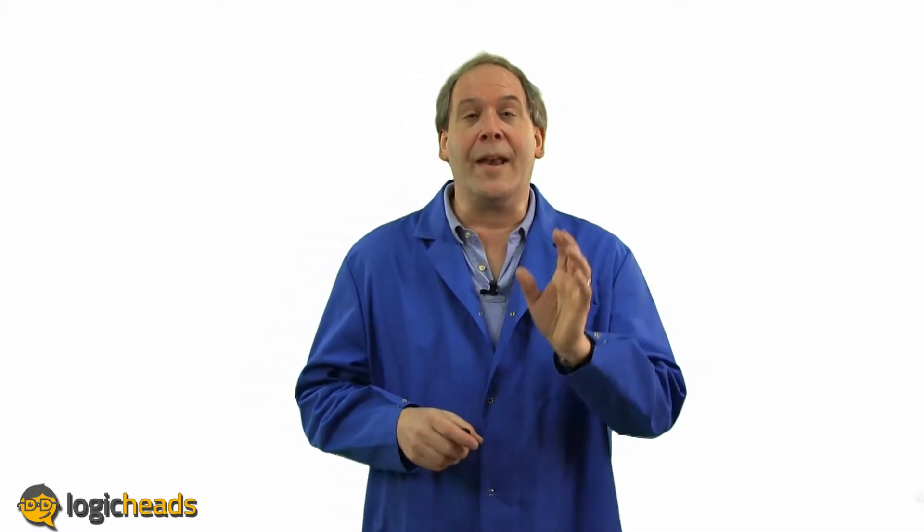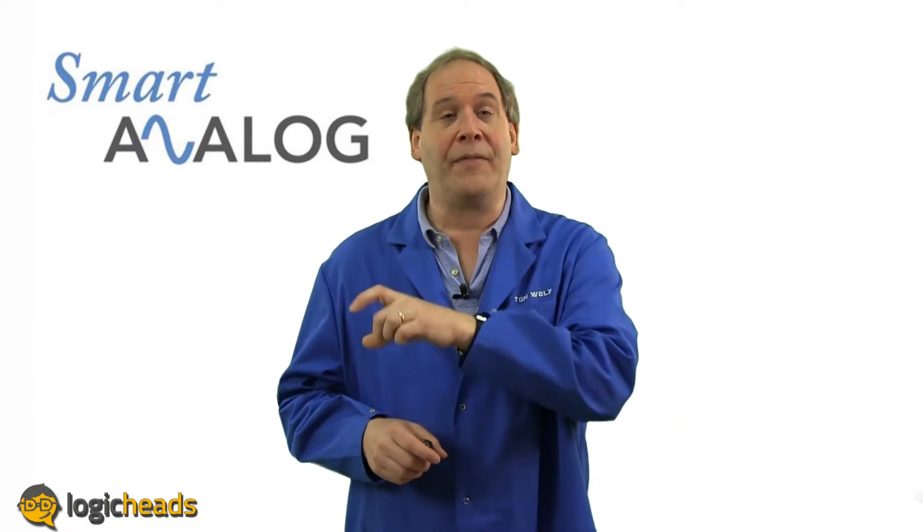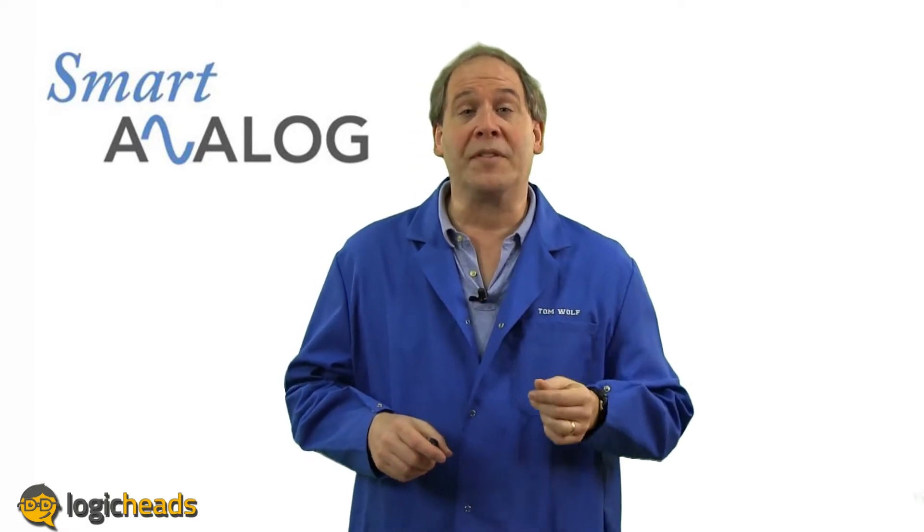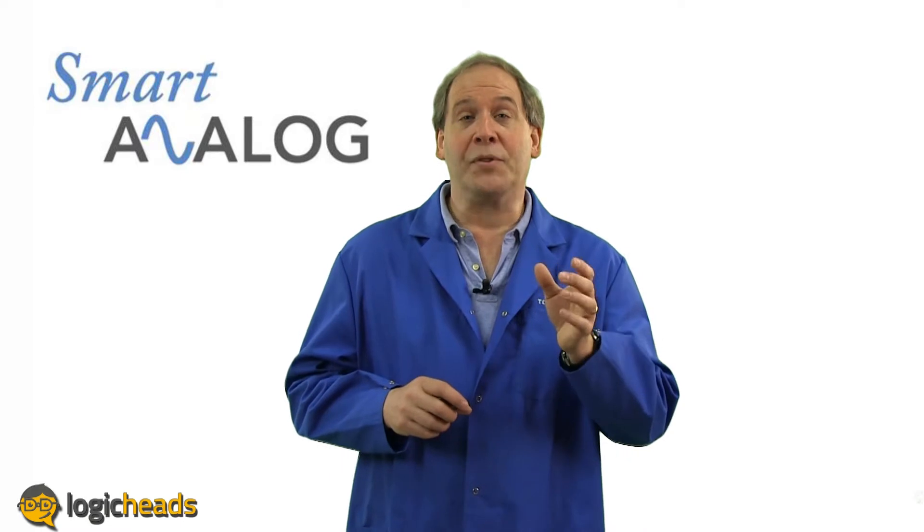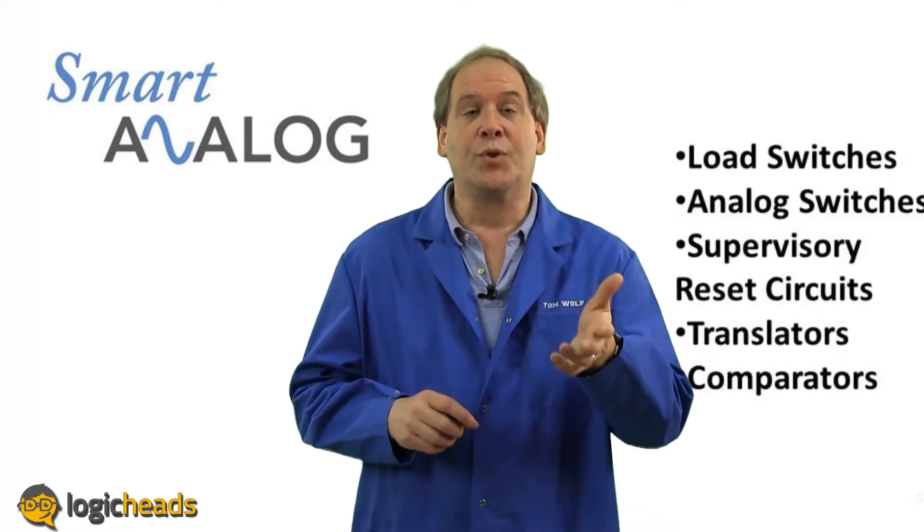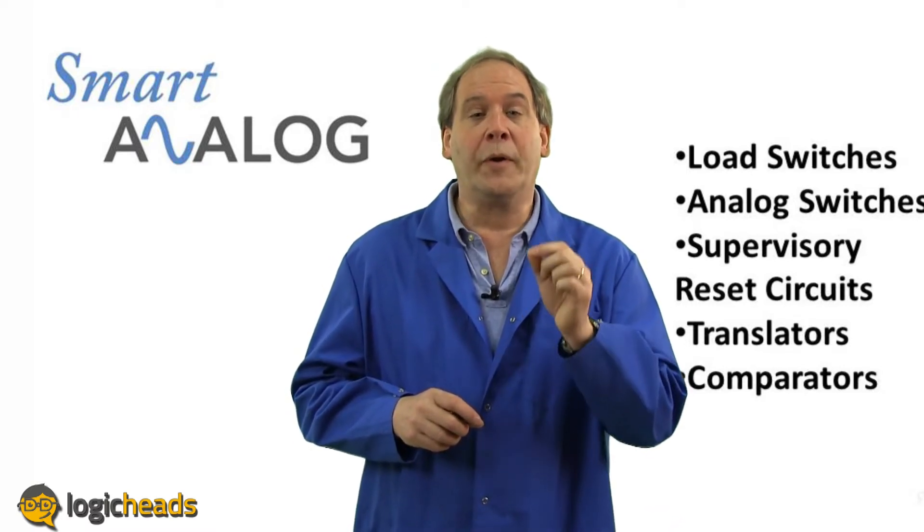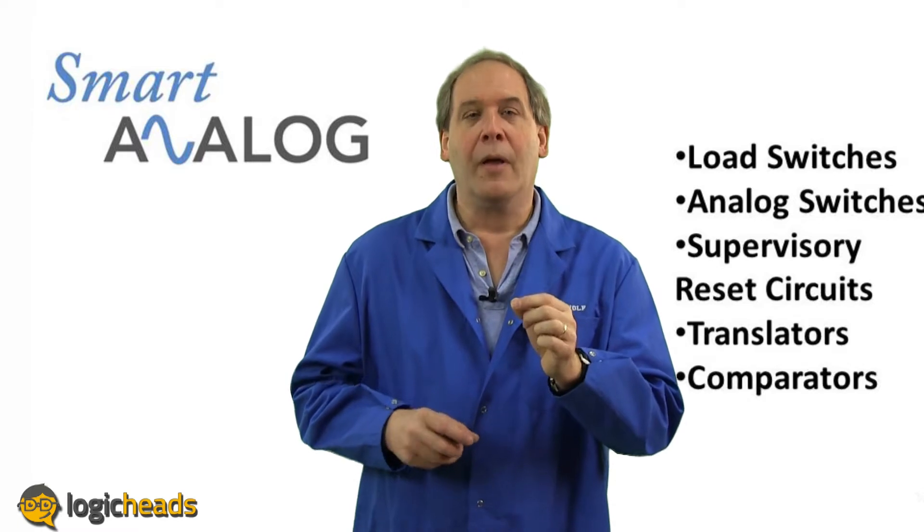Smart analog is the name for these types of products. They are half analog and half digital, and that gives them the best of both worlds. Examples are load switches, analog switches, supervisory reset circuits, translators and comparators. In this episode, we're going to focus on this last type, the comparator.